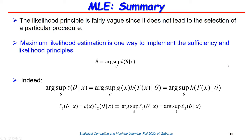To summarize: the likelihood principle says all information from observations for estimating theta comes through the likelihood function. The sufficiency principle is captured by the factorization L(theta|x) = g(x) · h(t(x)|theta), where g(x) has no theta dependence, showing that the sufficient statistics t(x) contain all data information needed for estimating theta. The MLE satisfies the sufficiency principle.